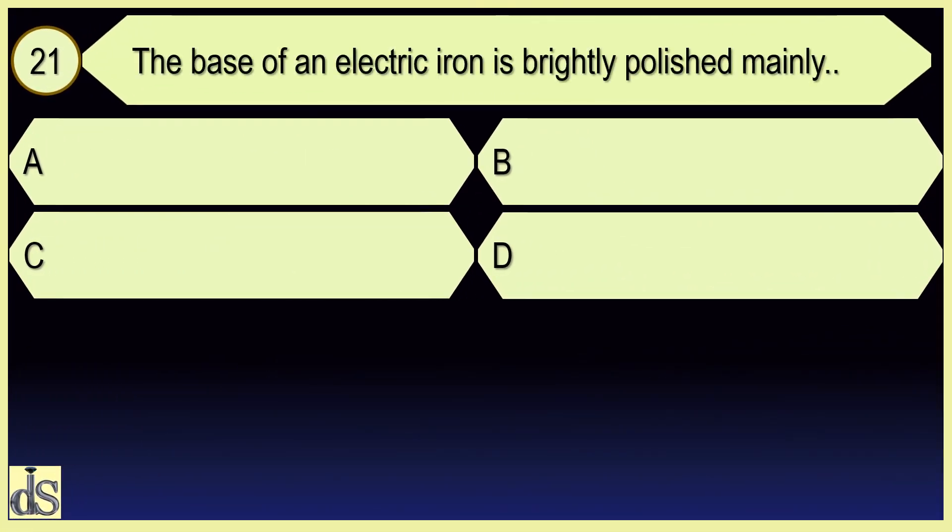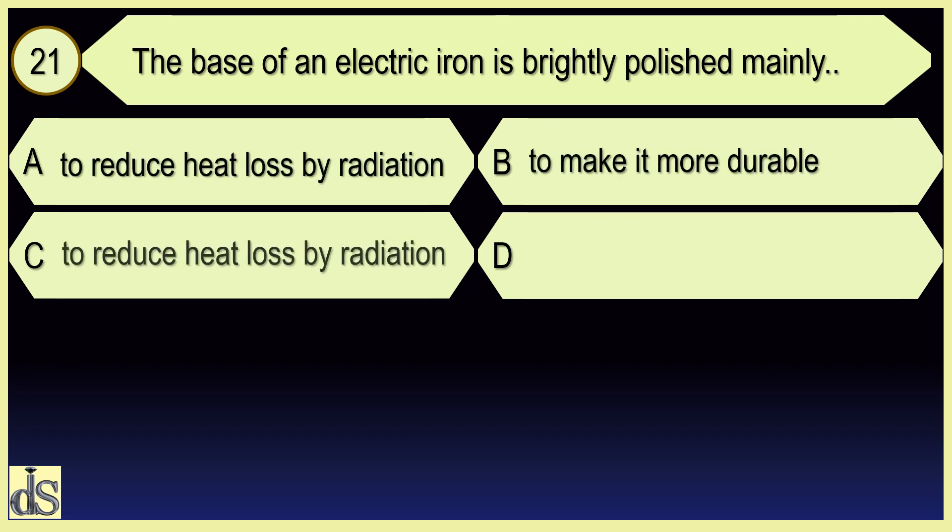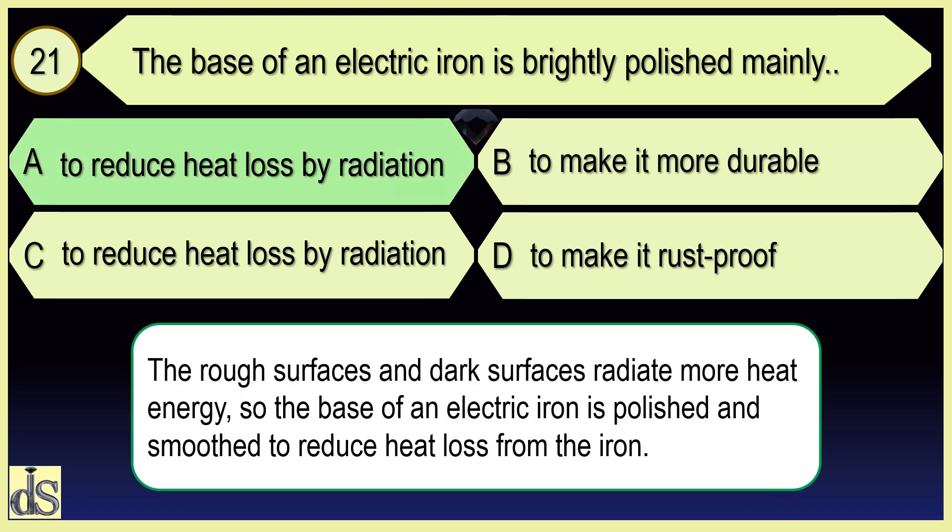The base of an electric iron is brightly polished mainly to reduce heat loss by radiation.